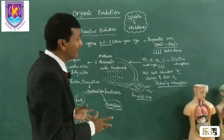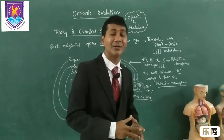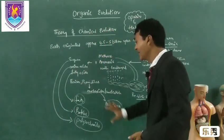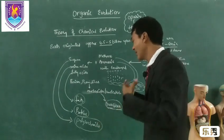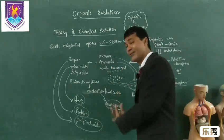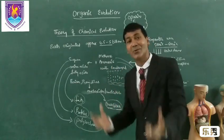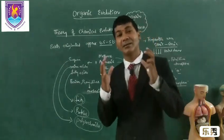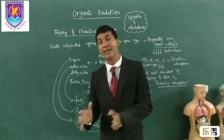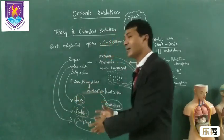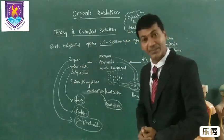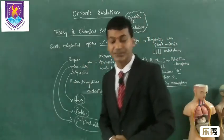We believe that all of this occurred when the earth originated. These biomolecules — nucleoproteins, fats, polysaccharides, and nucleic acids — are all components of living forms. Later, these chemicals evolved into living forms. This is the theory of chemical evolution. Thank you.